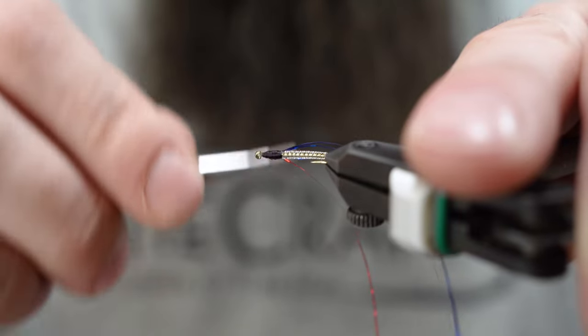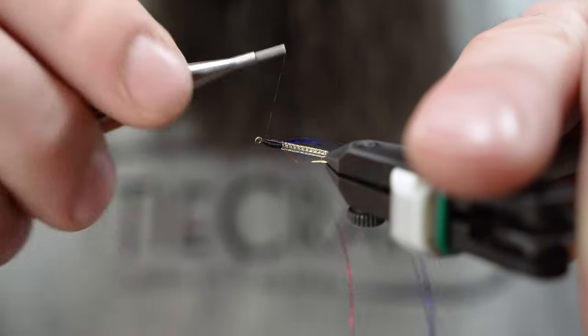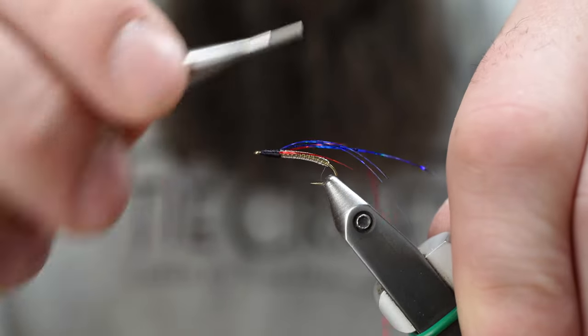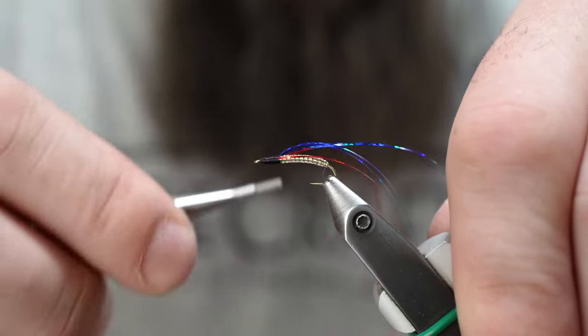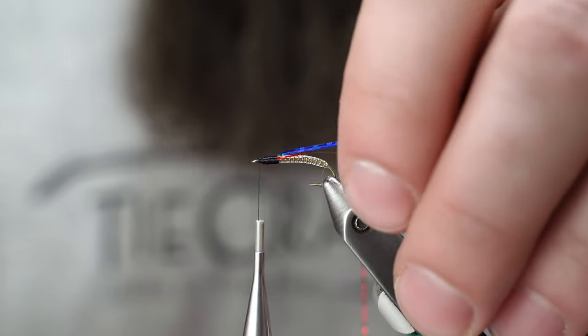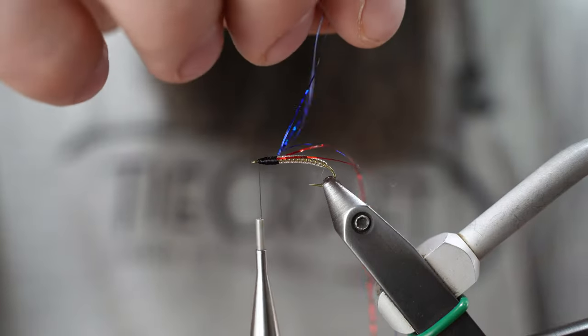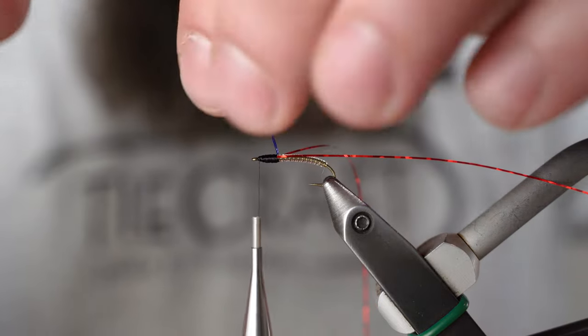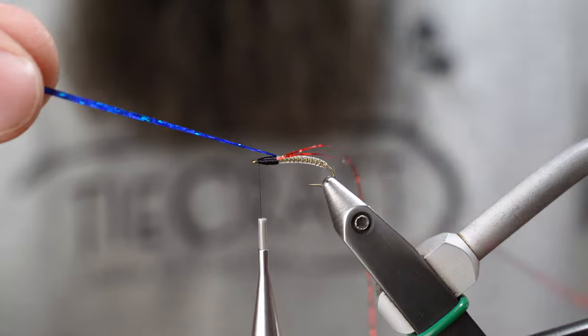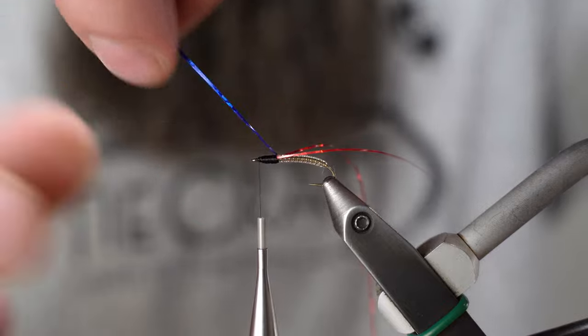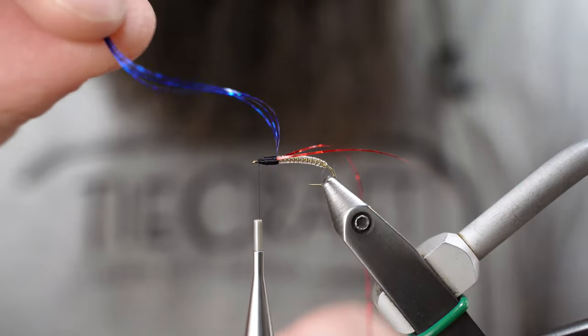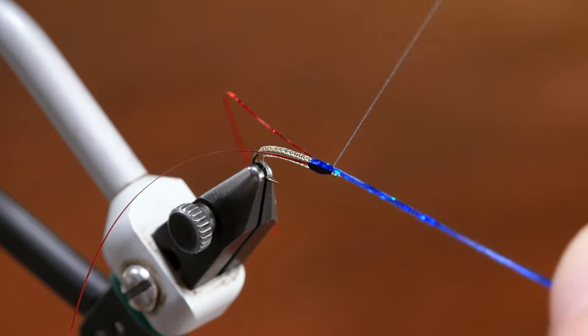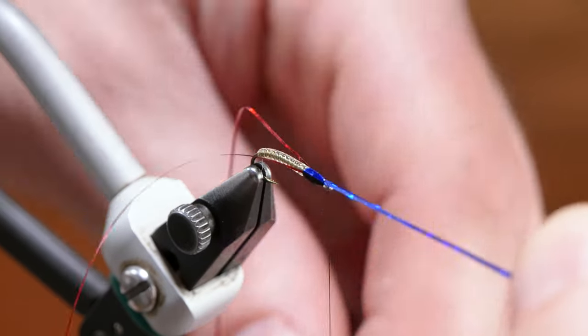Just clean those up there. Finish building that taper. I've got about four strands or so of this blue flashaboo up top. I'm just going to pull that forward.